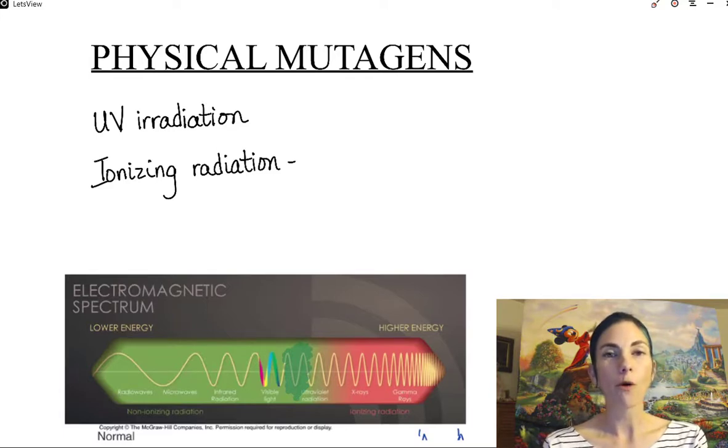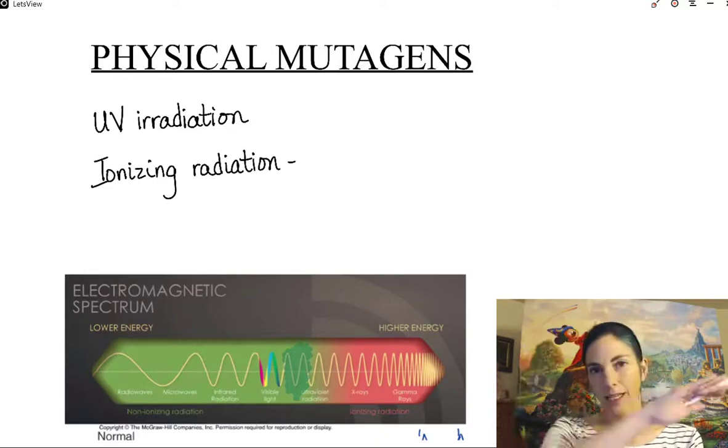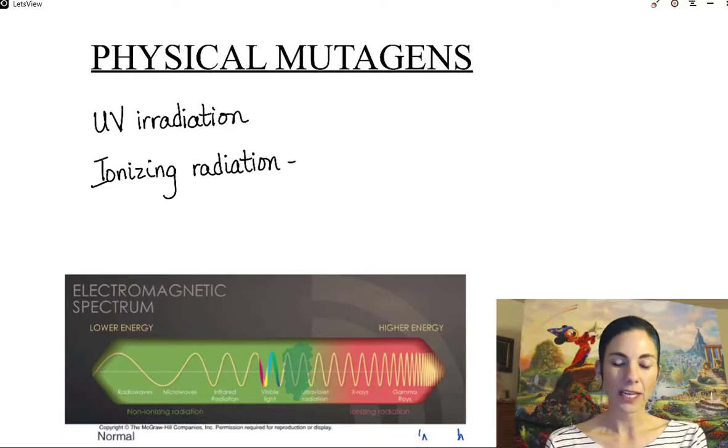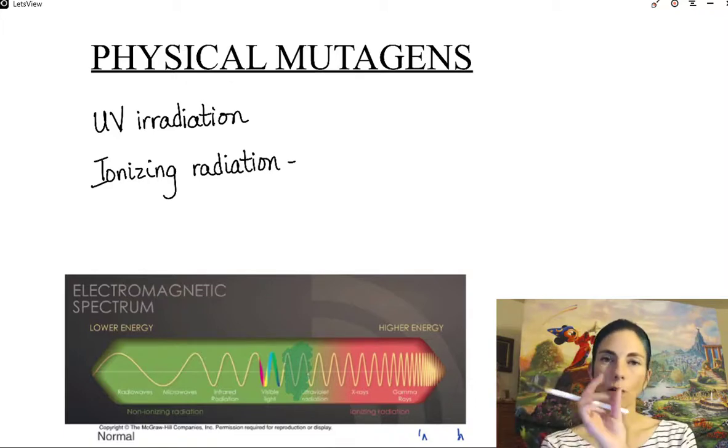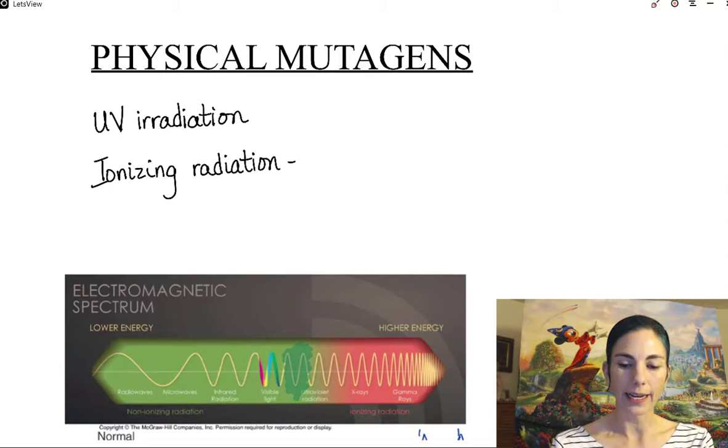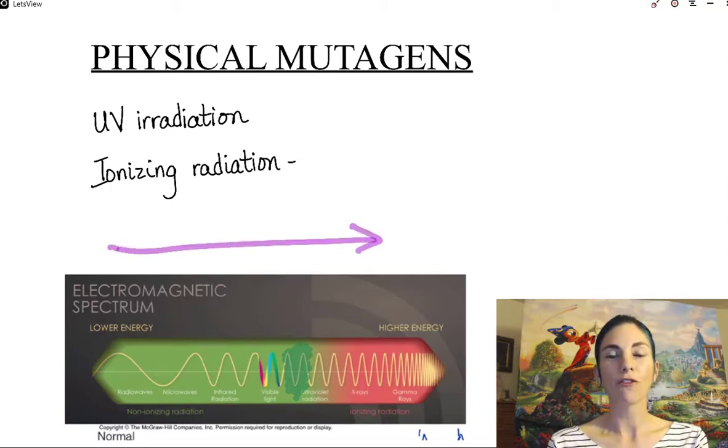They are both high-energy waves that are found on the electromagnetic spectrum. So when we think about electromagnetic wavelengths, we know that wavelengths can be pretty big and low energy or they can be really tight and high energy. And we can see that in this image here where as we move from left to right, we get to higher and higher energy.